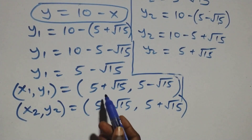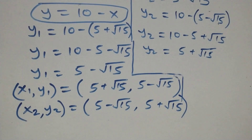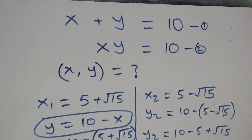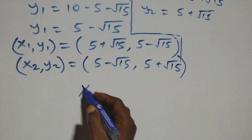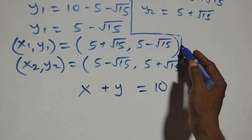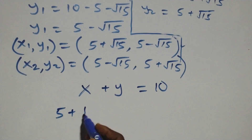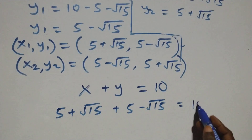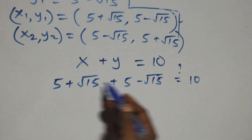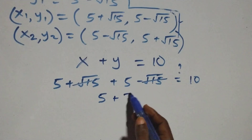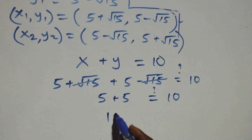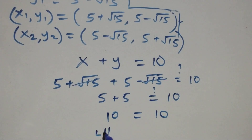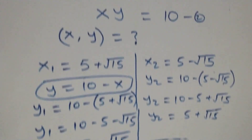We check either solution to confirm it satisfies the given problem. From equation one, x plus y equals to ten. Using the first solution: (five plus root fifteen) plus (five minus root fifteen) equals ten. The root fifteen terms cancel each other, and five plus five equals ten — left-hand side equals right-hand side. These solutions satisfy the first equation.